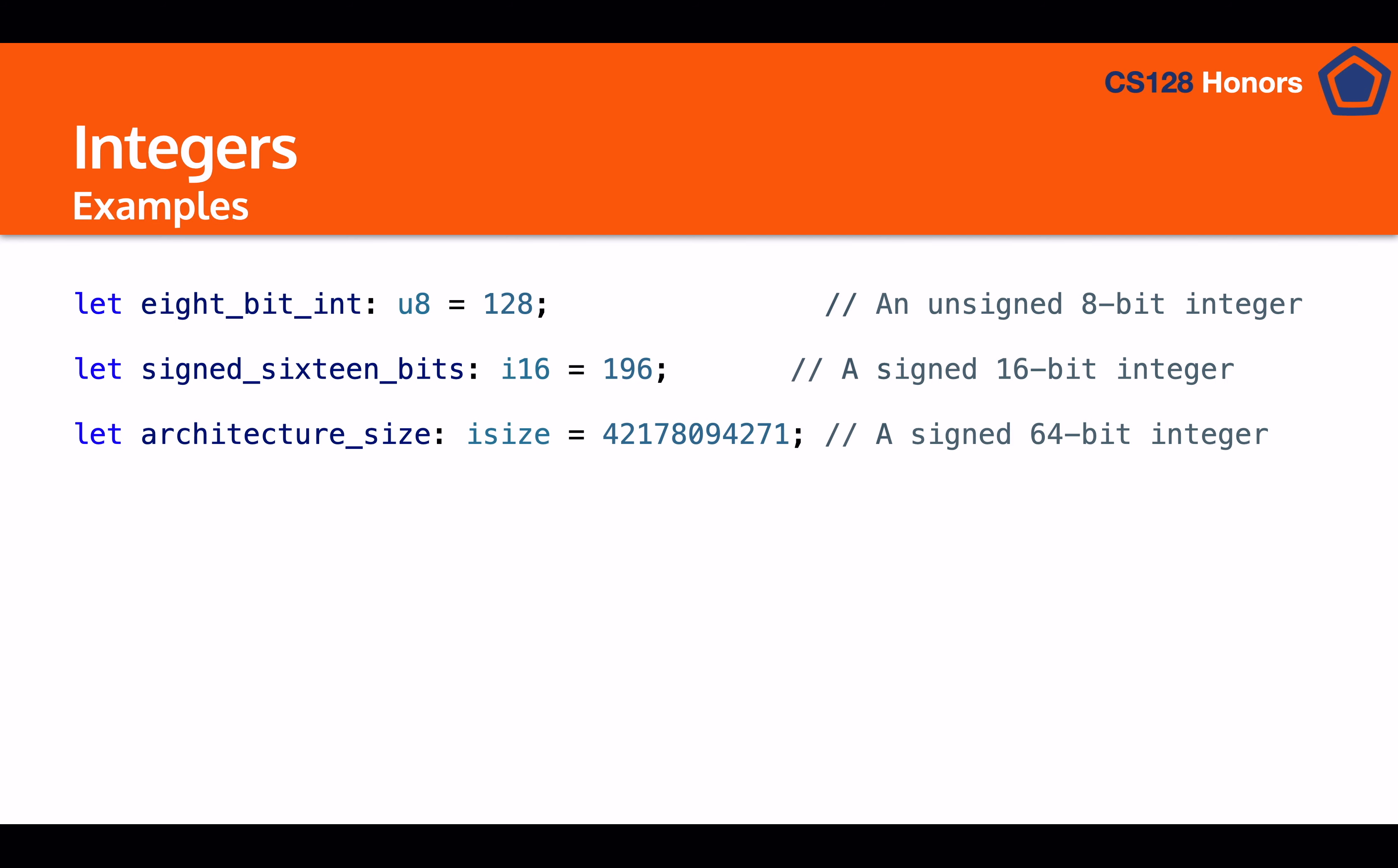And then finally we have an architecture size, which is an iSize in this case, which means that it's a signed 64-bit integer, at least on my computer. And as you can see, we're able to store very large numbers in there because 64-bit ints are very large in size.